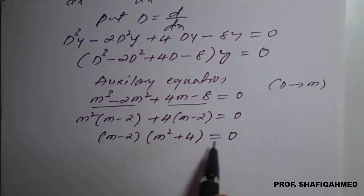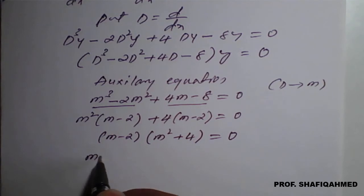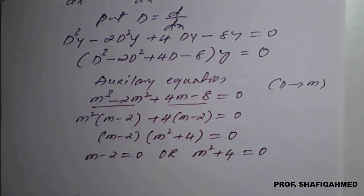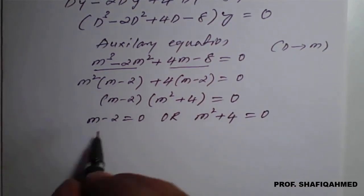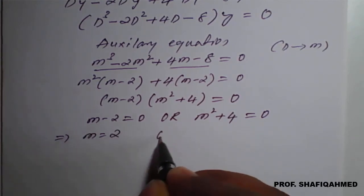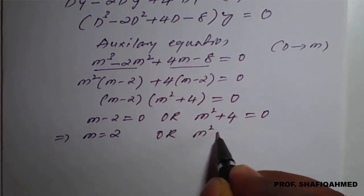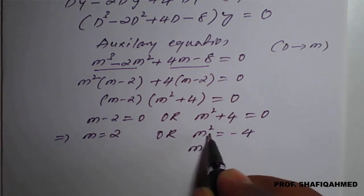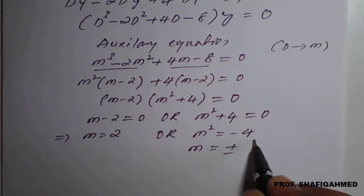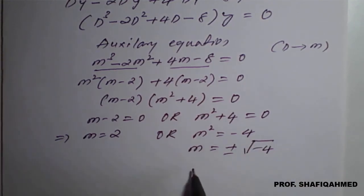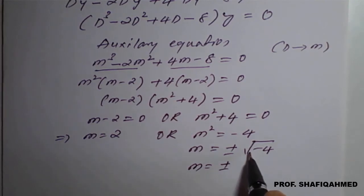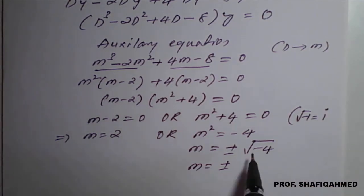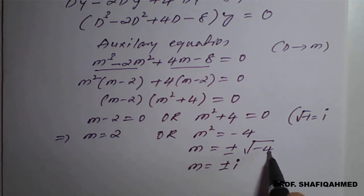Equating each factor to zero: m − 2 = 0 or m² + 4 = 0. From the first, m = 2. From the second, m² = −4, so m = ±√(−4). Since √(−1) = i, we get m = ±2i.